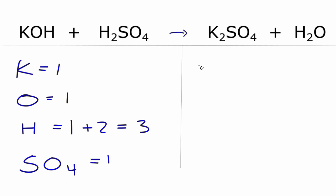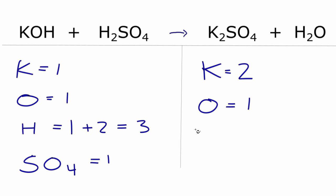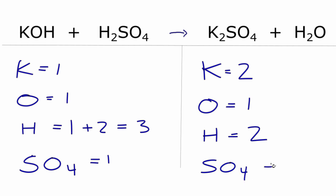Over here on the product side — potassium, I have two. Oxygen — I'm going to ignore this, and I only have one here. Hydrogens, I have two of those. And then SO4 — that's the sulfate there — I have one of those.